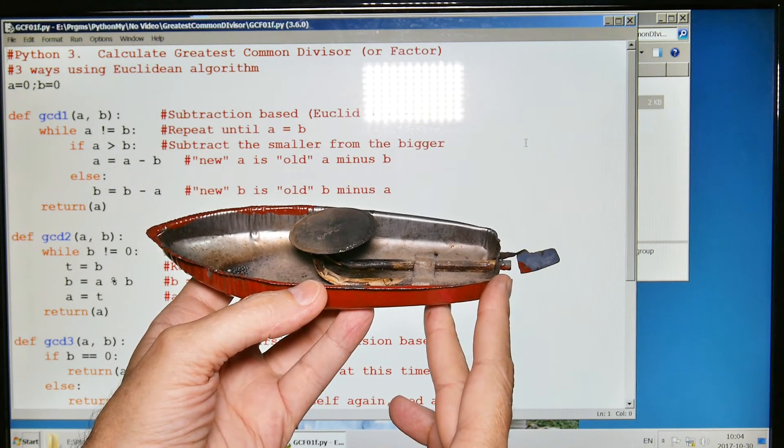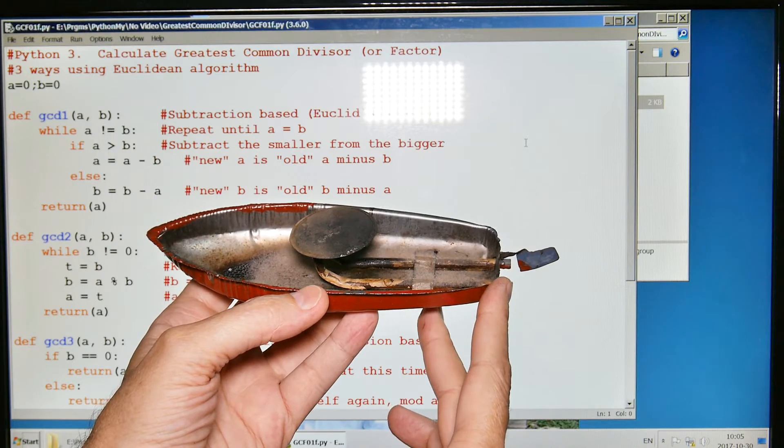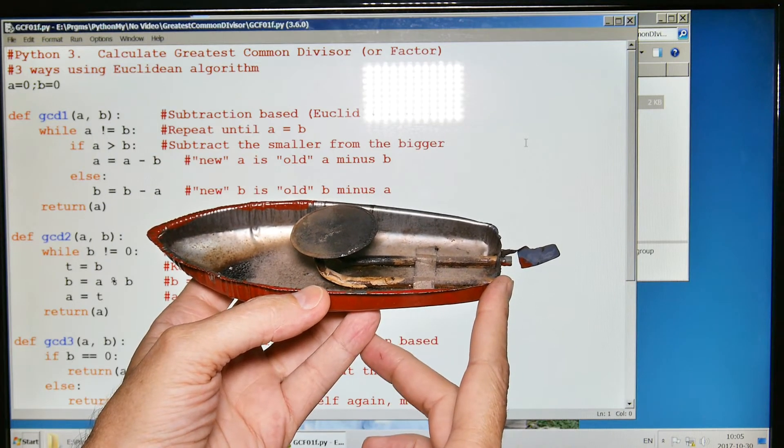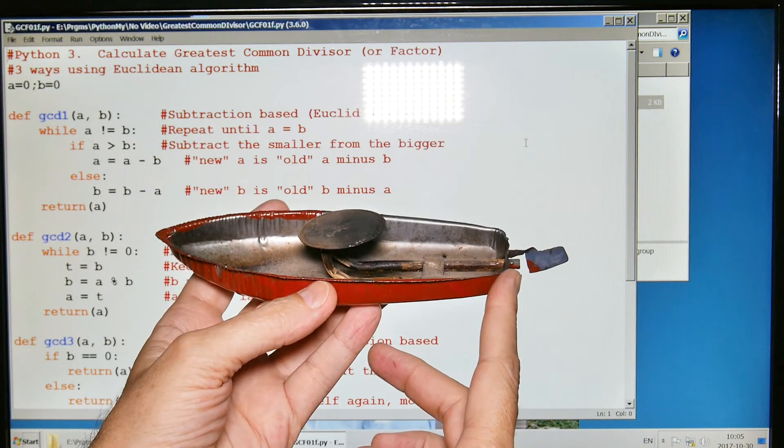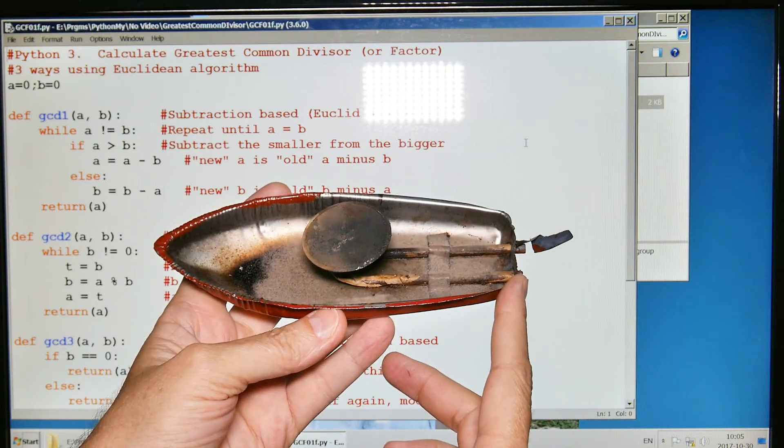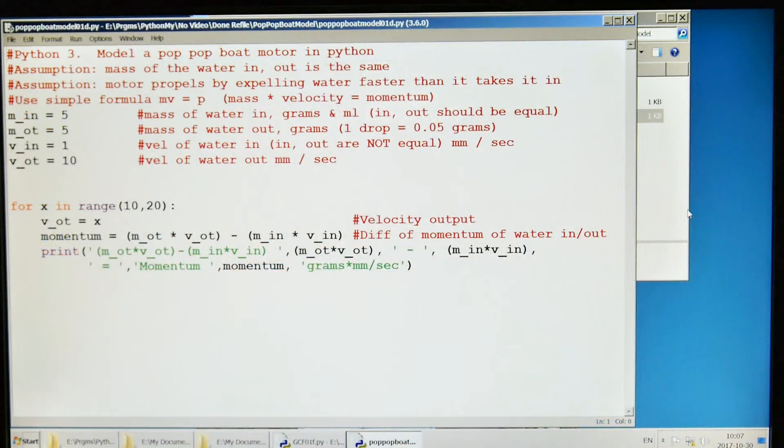So I had an idea and I wrote a Python program to look at the mathematics of it, to see if that might work. This is the program I wrote to test to see if my idea was correct about how the pop-pop boat moves.